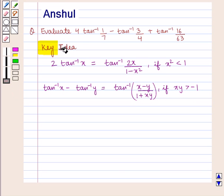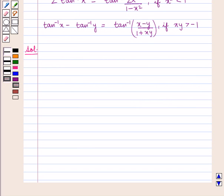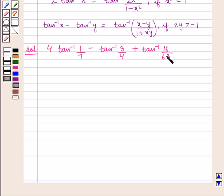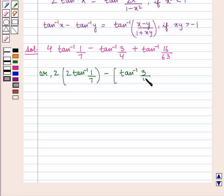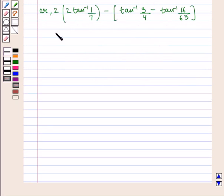With this key idea, let us proceed with the solution. We are given the expression 4 tan inverse of 1 by 7 minus tan inverse of 3 by 4 plus tan inverse of 16 by 63, which can be written as 2 into 2 tan inverse of 1 by 7, minus of tan inverse of 3 by 4 minus tan inverse of 16 by 63. First, let us solve 2 into 2 tan inverse of 1 by 7.